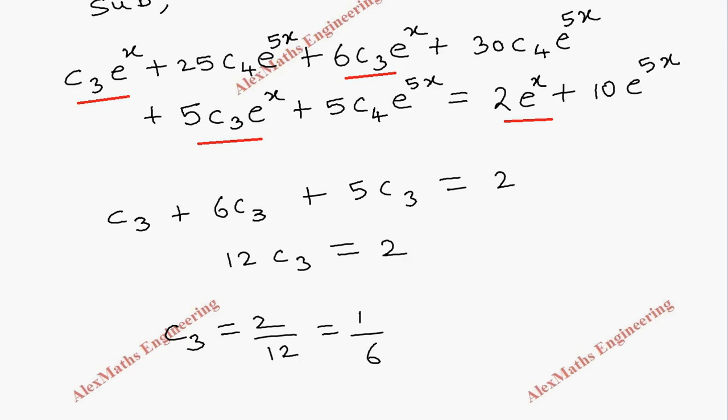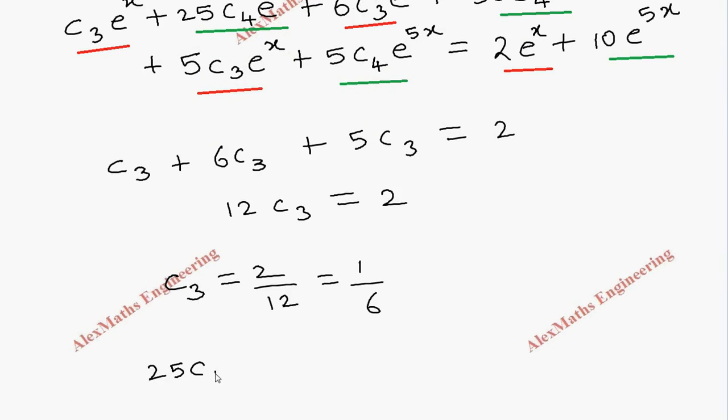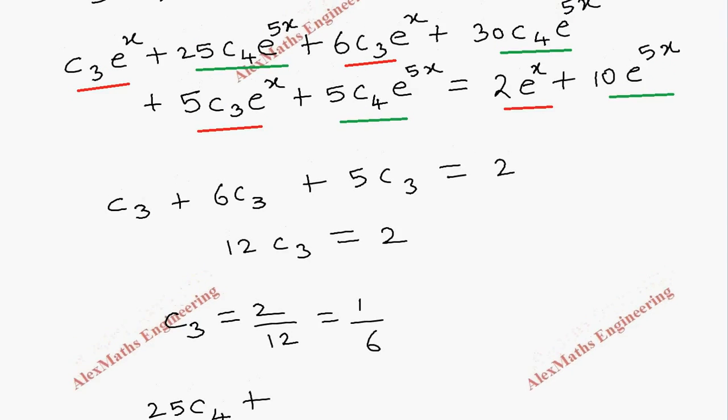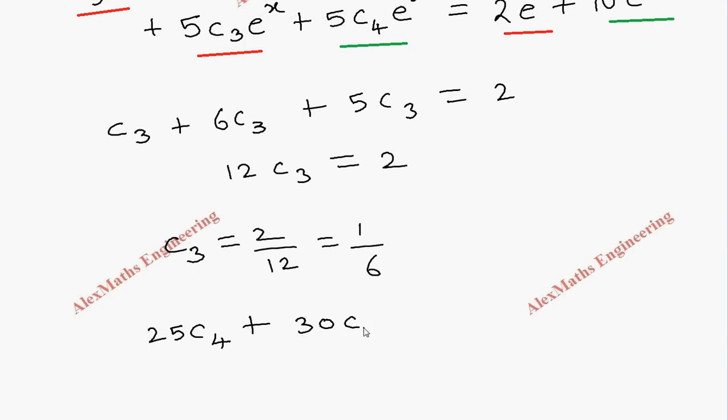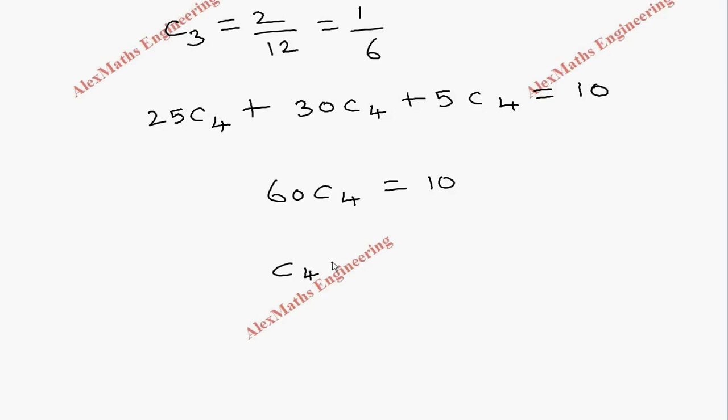In the same way, let's equate the coefficient of e power 5x on both the sides. So, here, we get 25c4 plus 30c4. Then, last term is 5c4 equal to 10. Now, adding this totally, we get 60c4 equal to 10. Then, c4 from here, it is 10 by 60. After cancelling this, we get 1 by 6. So, c4 equal to 1 by 6.